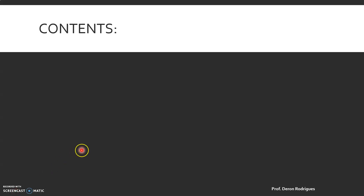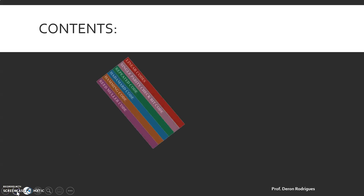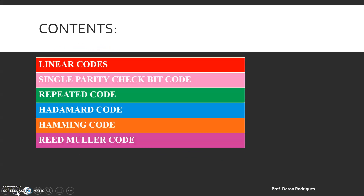The contents of the lecture: first we shall have a look at what are linear codes, followed by different types of linear block codes, such as Single Parity Check-bit Code, Repeated Code, Hadamard Code, Hamming Code, and Reed-Muller Code.